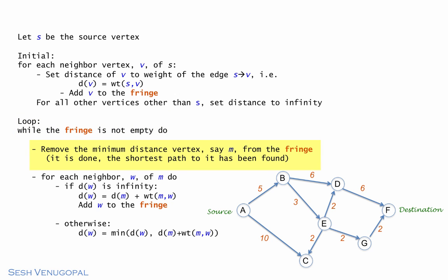In every iteration, we're going to remove the minimum distance vertex from the fringe. And when we do that, we know its shortest distance has been found. And that would be B, in this case, in the very first iteration. And then for each neighbor of this vertex we just picked, if the distance of the neighbor is infinity, then we would set its distance to the distance of the minimum vertex plus the weight of the edge from that to the neighbor. So, for example, for D, it would be 5, which is B's distance, plus 6, so 11. And for E, it would be 5 plus 3, 8. And these two vertices would be added to the fringe.